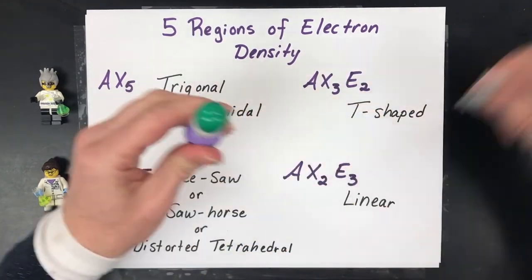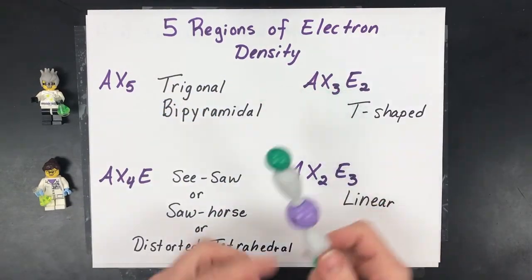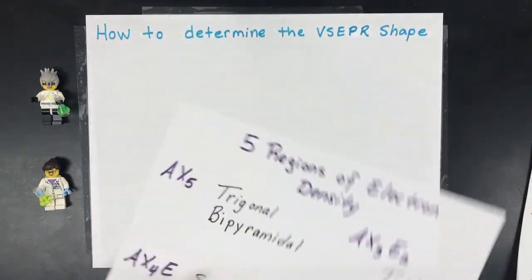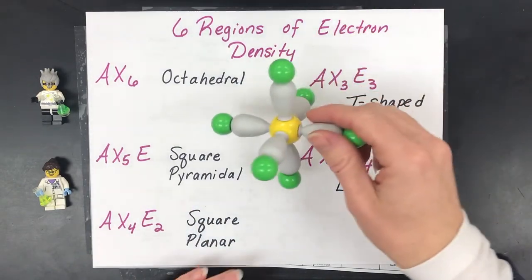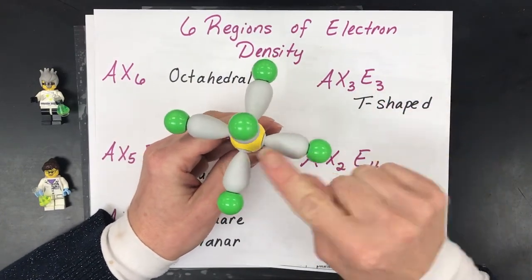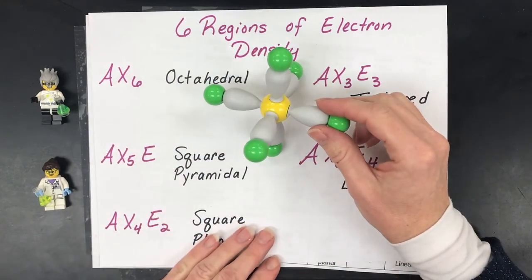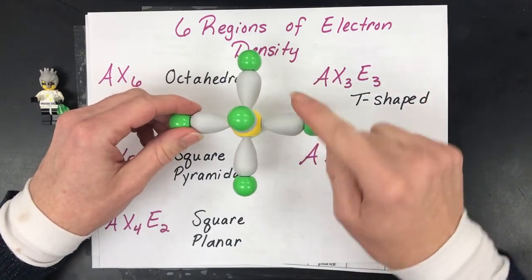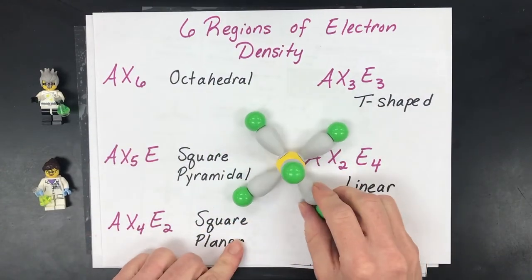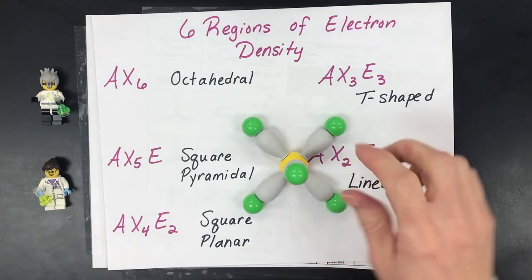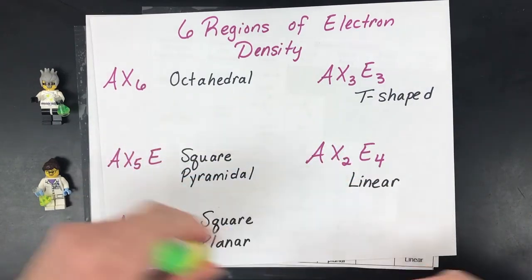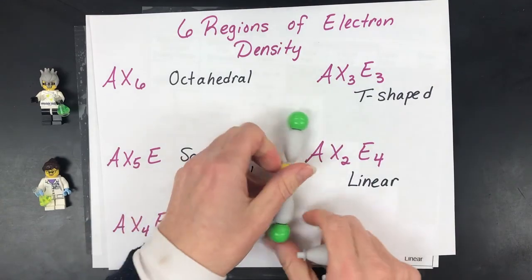The last five-region configuration keeps lone pairs as far apart as possible: with two bonded and three lone pairs it's a linear shape — AX2E3. For six regions of electron density, the center atom again needs more than 15 protons. The base shape is octahedral with six bonds. With one lone pair it becomes square pyramidal; with a lone pair at the 180-degree spot it's square planar; with three lone pairs and three bonded it's T-shaped; and finally linear.